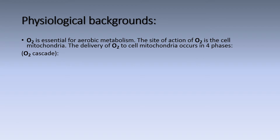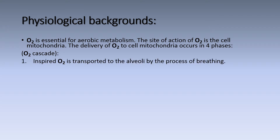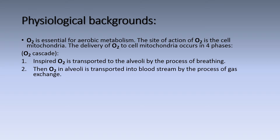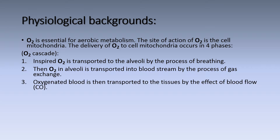Physiological Backgrounds. Oxygen is essential for aerobic metabolism. The site of action of oxygen is the cell mitochondria. The delivery of oxygen to cell mitochondria occurs in four phases, which is the oxygen cascade. First, inspired oxygen is transported to the alveoli by the process of breathing. Then, oxygen in the alveoli is transported into the bloodstream by the process of gas exchange. Oxygenated blood is then transported to the tissue by the effect of blood flow, which is the cardiac output.